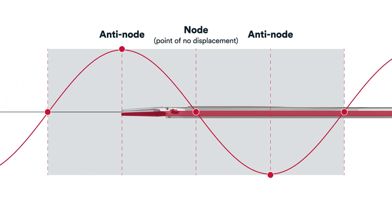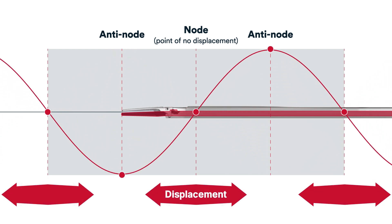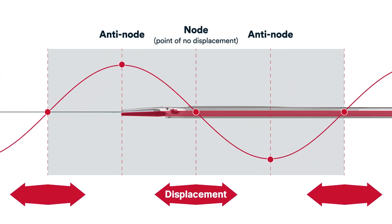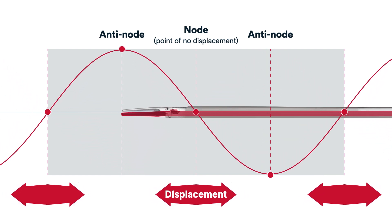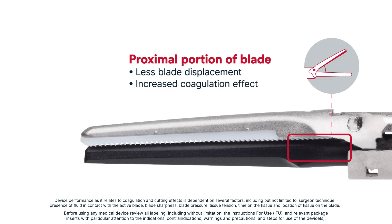Tissue location on the blade. The location of tissue along the blade impacts cutting and coagulation. The placement of nodes and anti-nodes along the blade creates areas with varying amounts of displacement. The distal end features the greatest displacement and an increased cutting effect, supporting the tip bite or tip nibbling technique for dissecting tissue. Conversely, the blade's proximal area at the clamp arm hinge has less displacement and an increased coagulation effect, which is important to consider when placing a vessel in the jaws of an ultrasonic device for sealing.